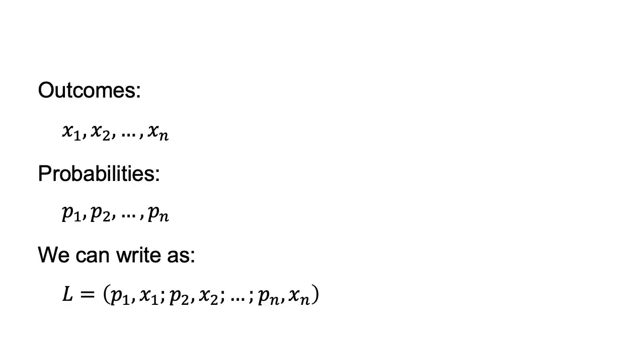Suppose we have a lottery L with n possible outcomes: x1, x2, through to xn, each with probabilities p1, p2, through to pn.